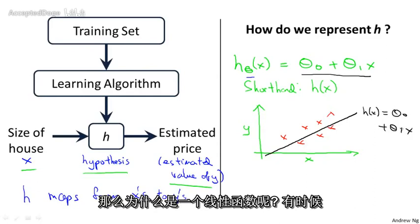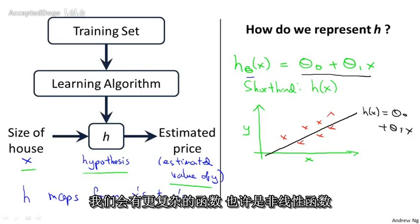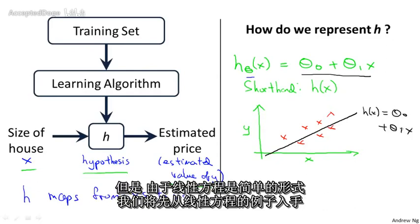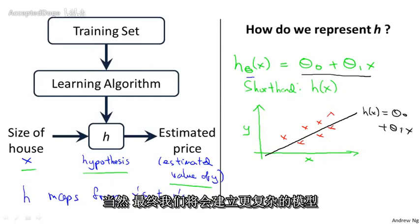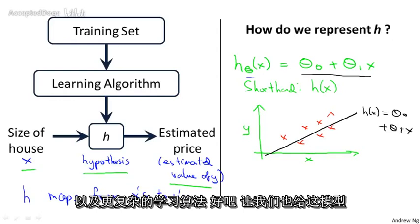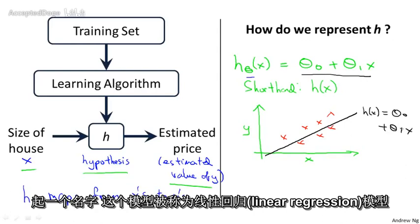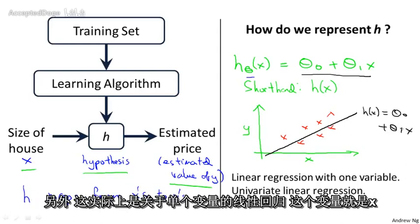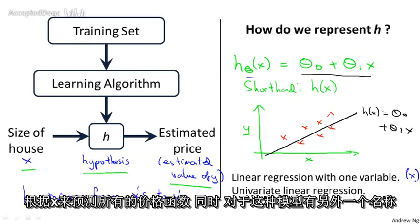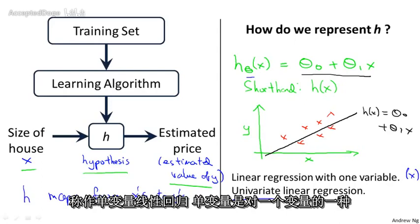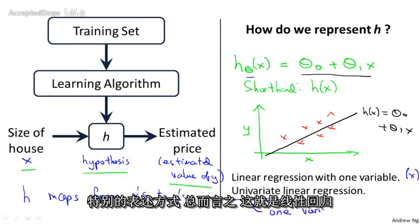Why a linear function? Well, sometimes we'll want to fit more complicated, perhaps nonlinear functions as well. But since this linear case is the simpler building block, we'll start with this example first of fitting linear functions, and we'll build on this to eventually have more complex models and learning algorithms. This model is called linear regression — or more specifically, linear regression with one variable, the variable being x. Another name for this model is univariate linear regression, where univariate is just a fancy way of saying one variable.